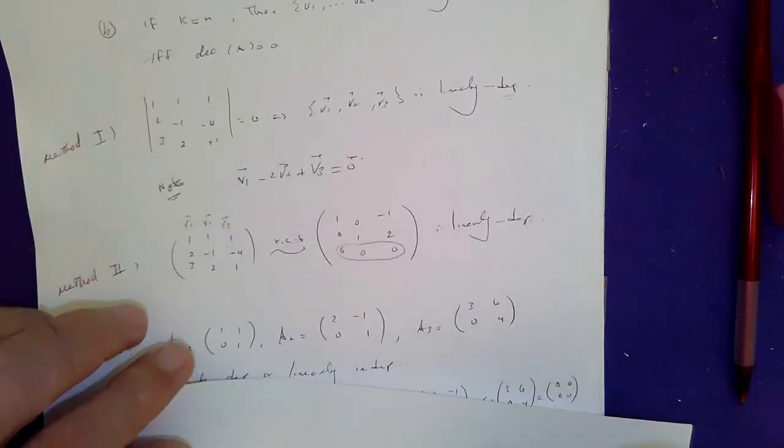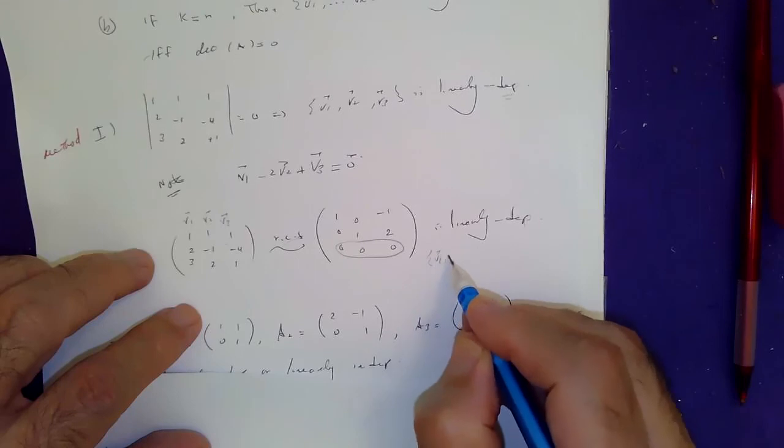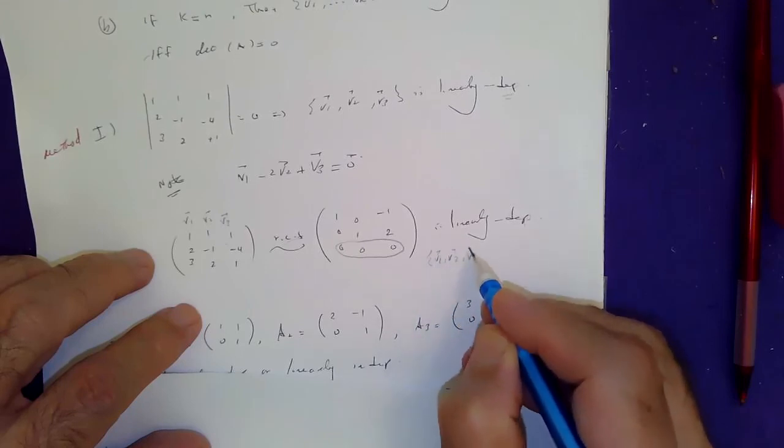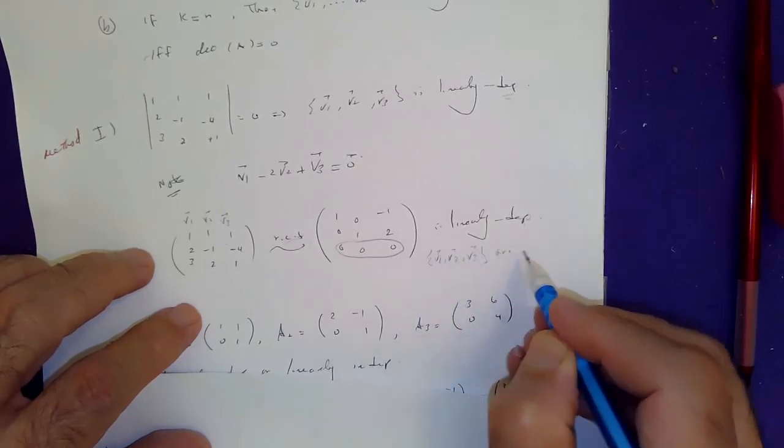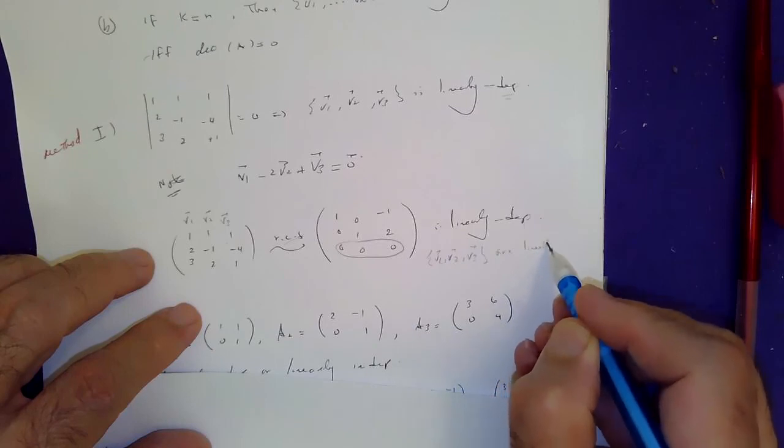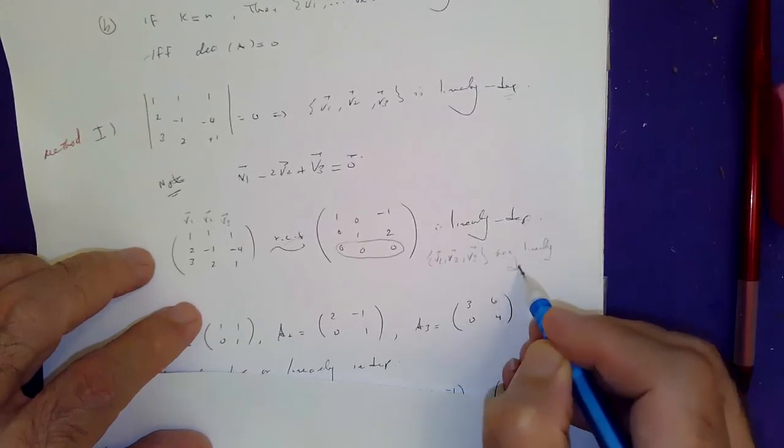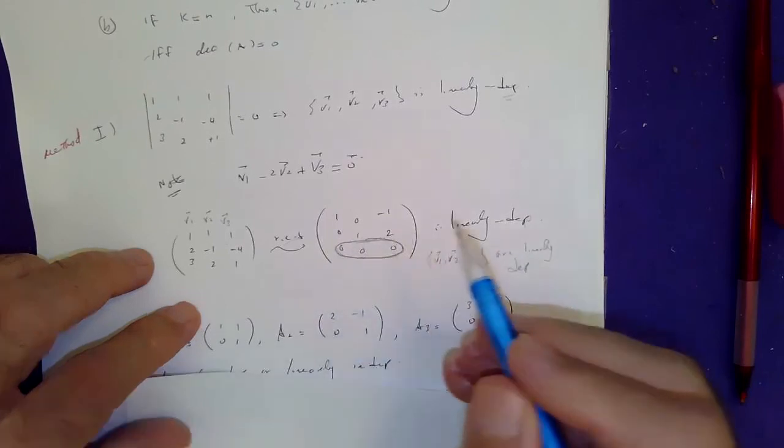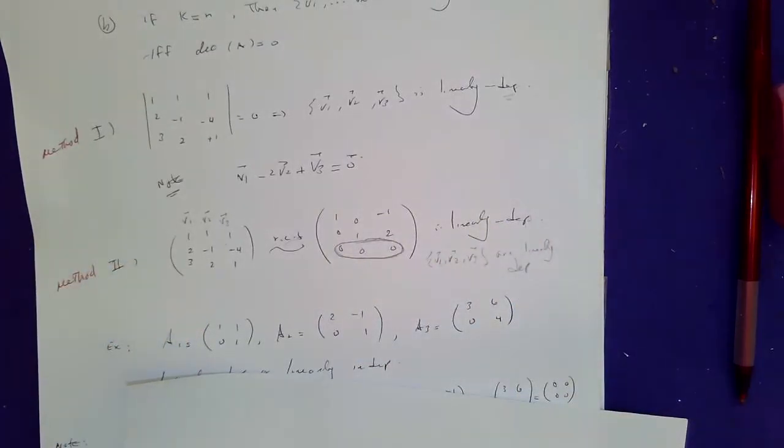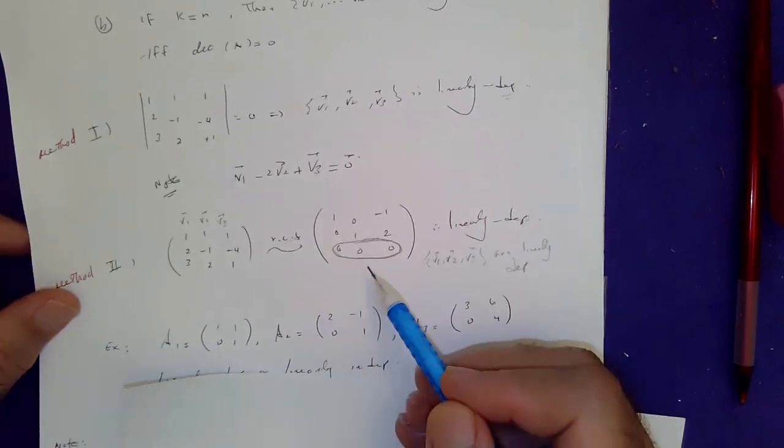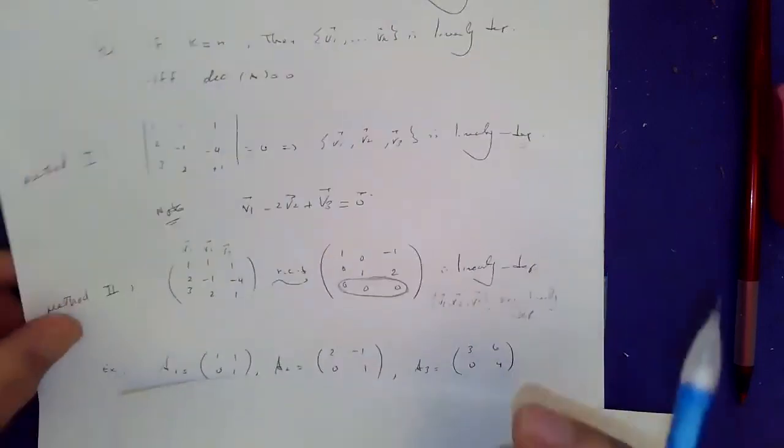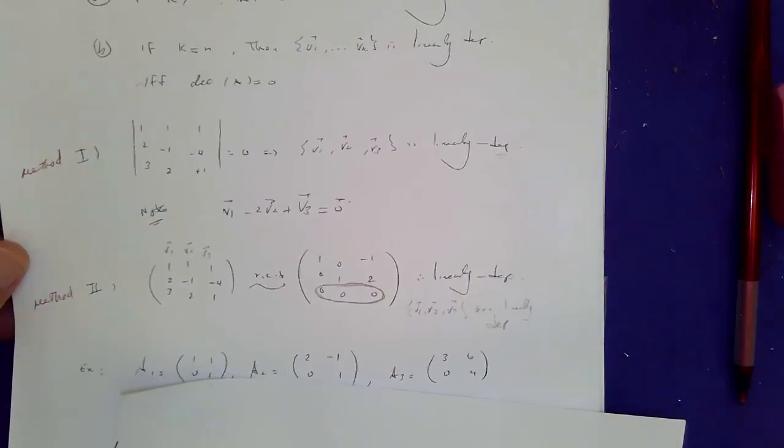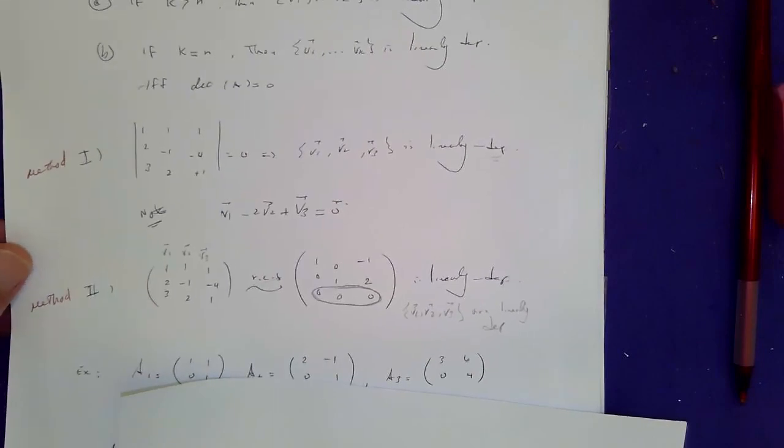I have v1, v2, and v3 are linearly dependent. Why dependent? Look at this. Row echelon form has a row of all zeros. I think this is a fascinating method. So I hope you enjoy that method as much as I do. Thank you.